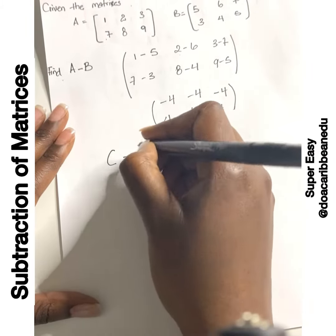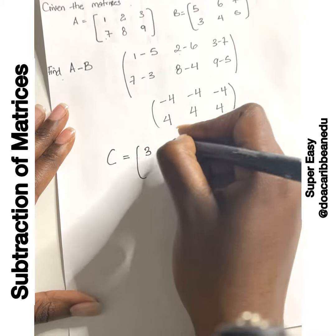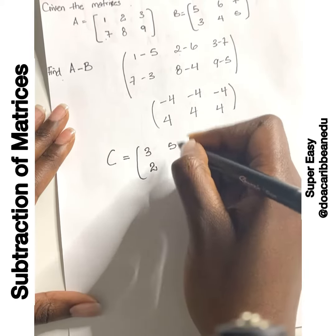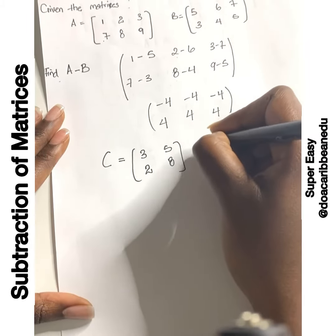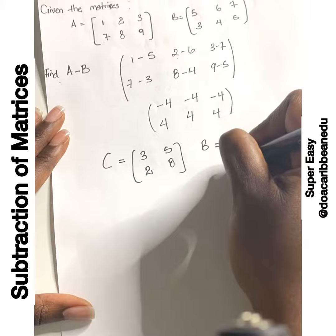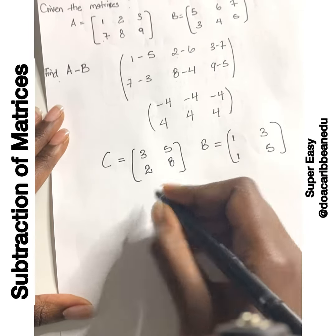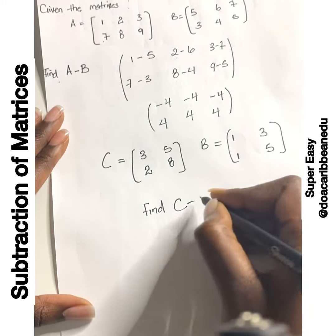I want you to try one. Given the matrix C equals 3, 5, 2, and 8, and B equals 1, 3, 1, and 5, can you find C minus B?